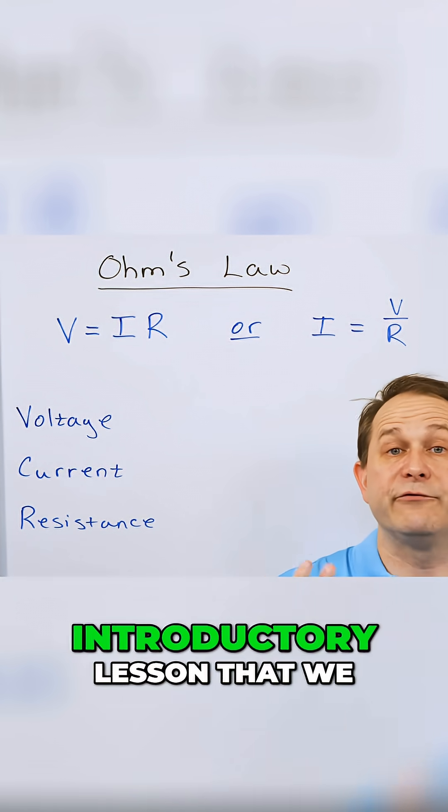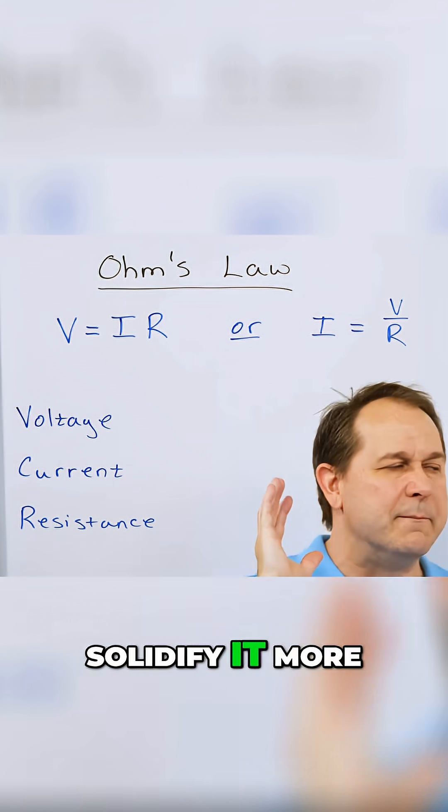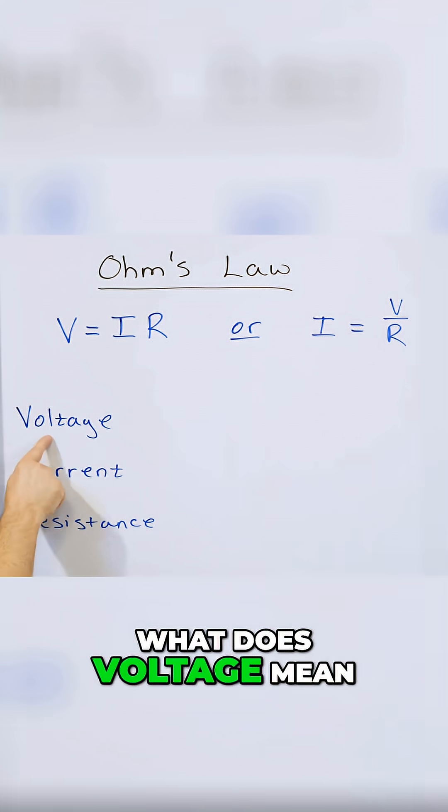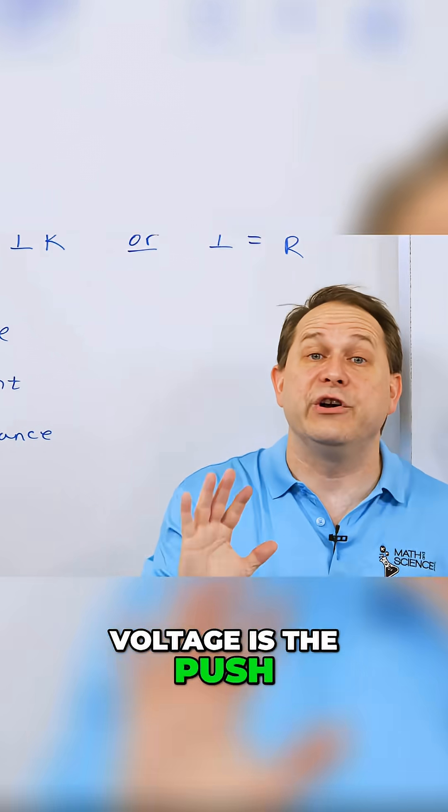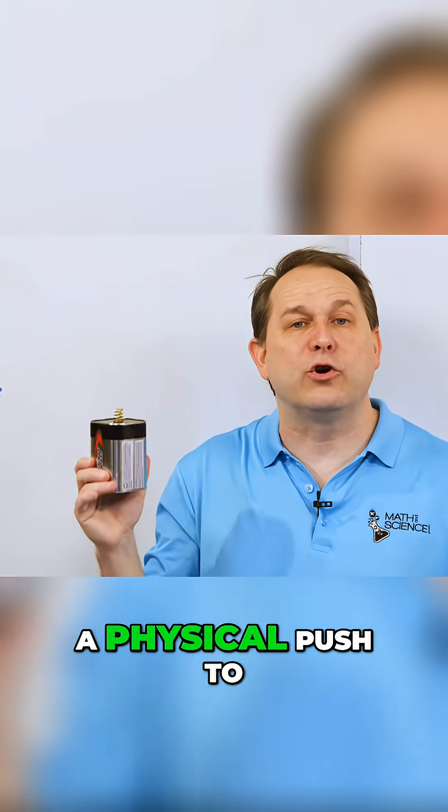Now we mentioned in the introductory lesson that we have voltage, current, and resistance, but we need to solidify it more. What does voltage mean? Voltage is the push in an electric circuit. This battery is providing a physical push.